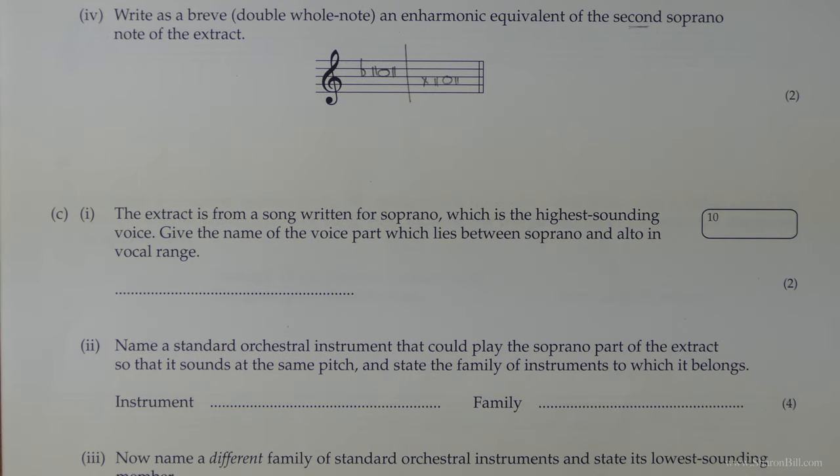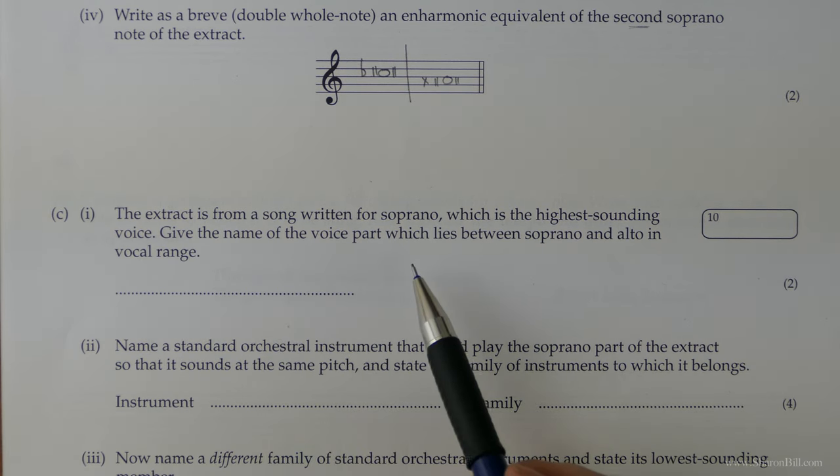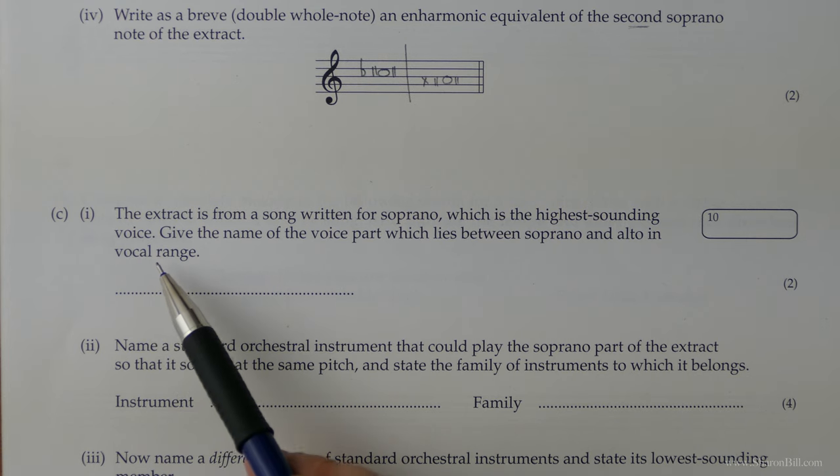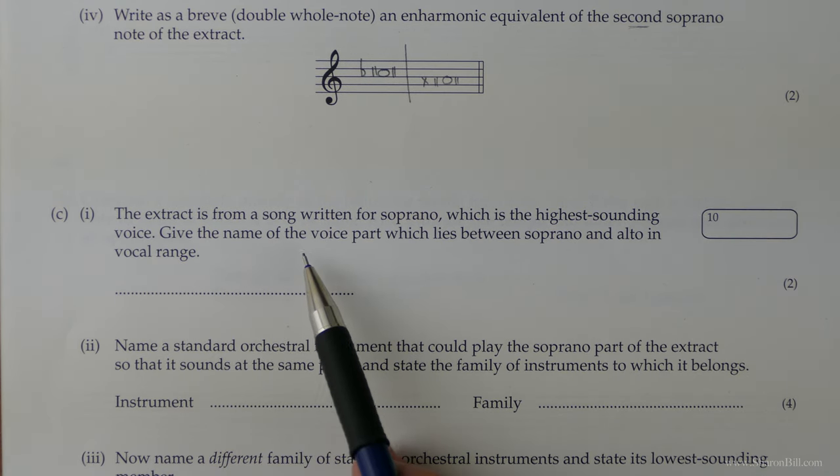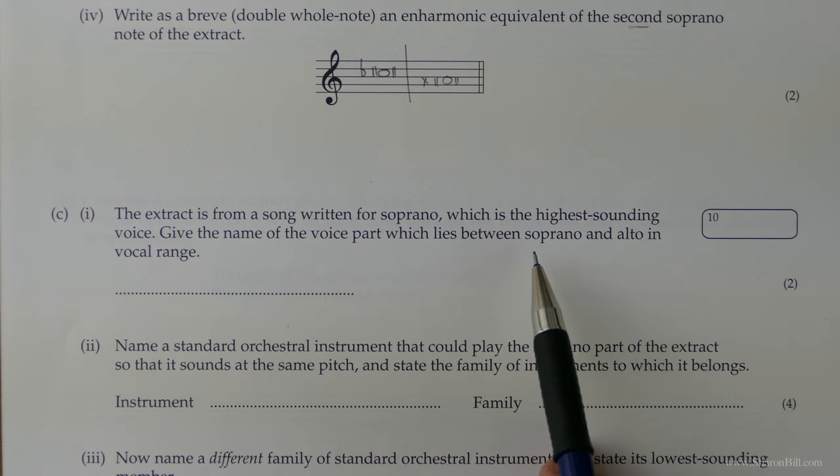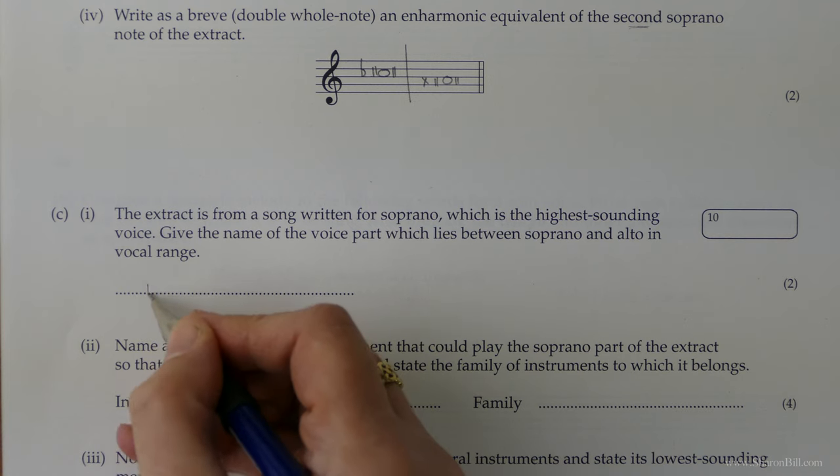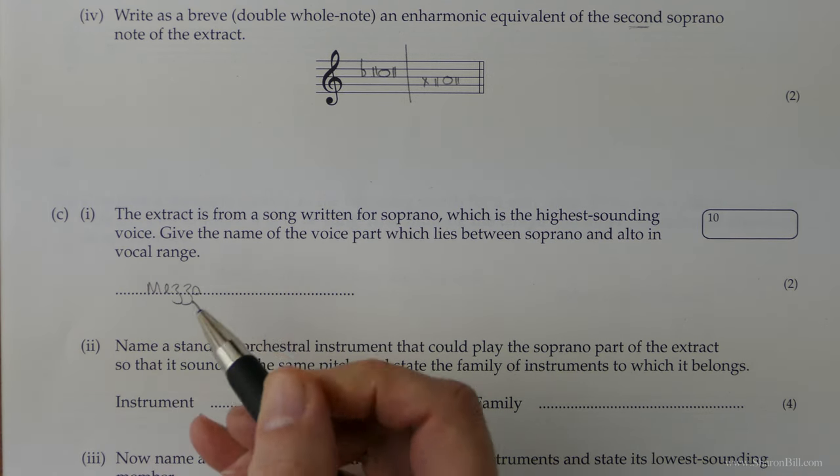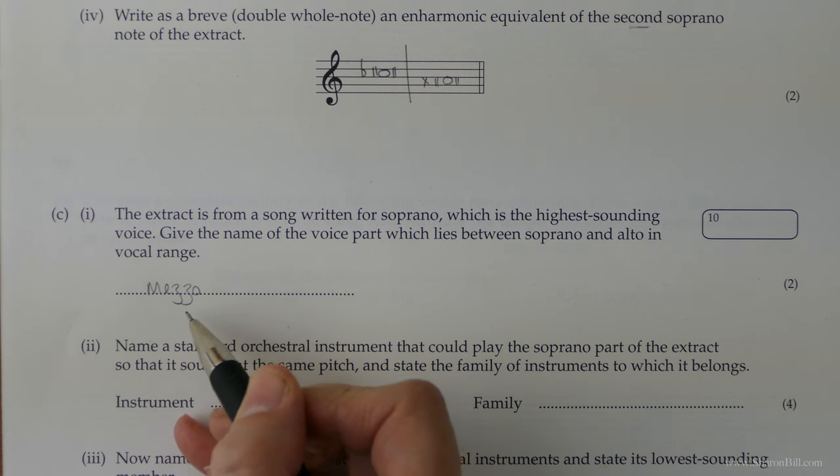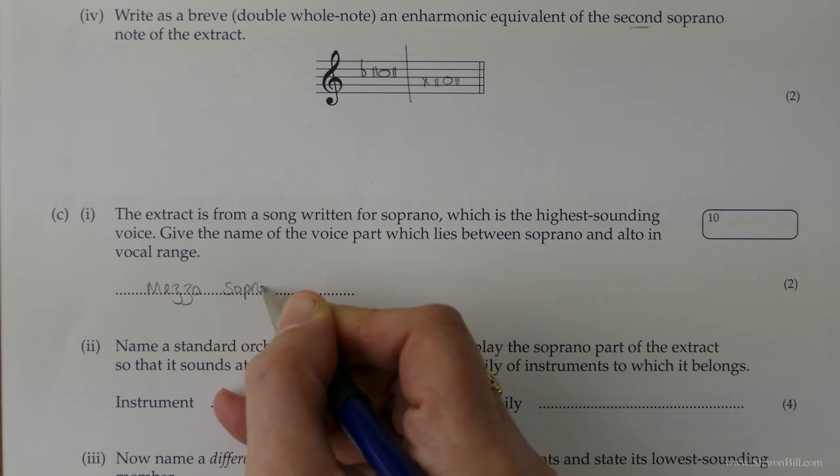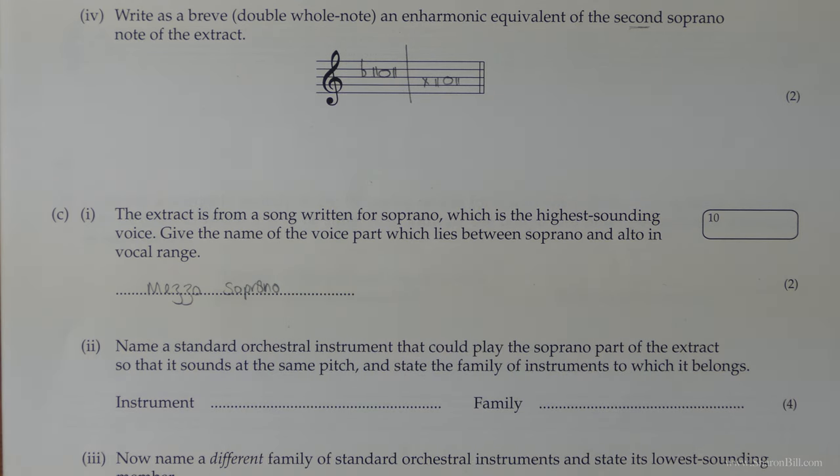So just a little bit of general information now. This is a song written for soprano which is the highest voice in the voice parts. So give the name of the voice part which lies between soprano and alto in the vocal range. Now if you've got my pdf you should have that information to hand. That's the mezzo soprano. If you think about it, mezzo kind of means middle or like we have mezzo forte or moderate or medium. And so medium or middle soprano kind of makes sense.